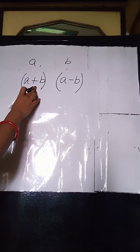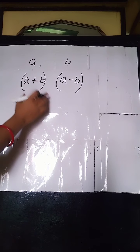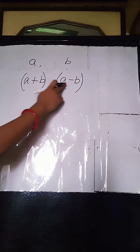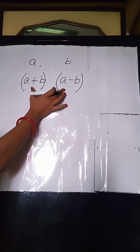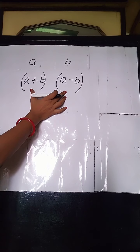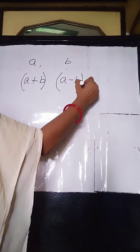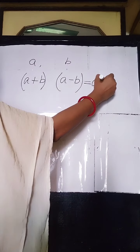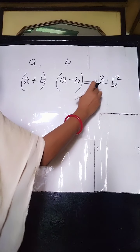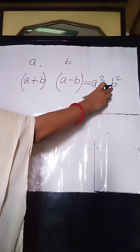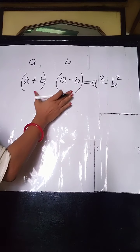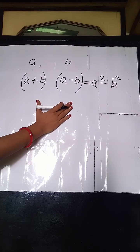A plus B into A minus B — this formula we are going to learn. The result is the difference of the squares of the two terms: the difference of A square and B square. This formula we are going to start today.